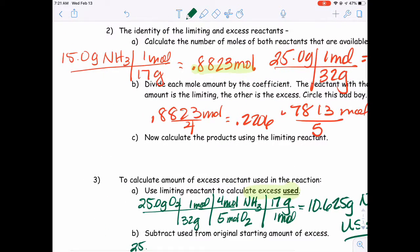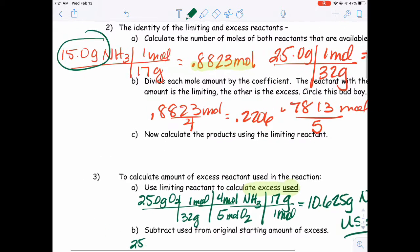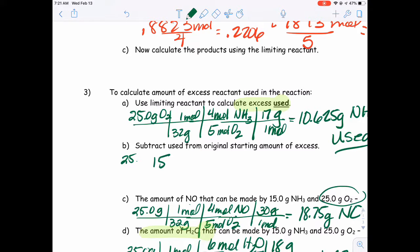How many grams did we have to begin with? Well, we had 15 grams to begin with. So if we want to know what was left over, we take 15 grams minus 10.625 grams. 15 minus 10.625, 4.375 grams left over.